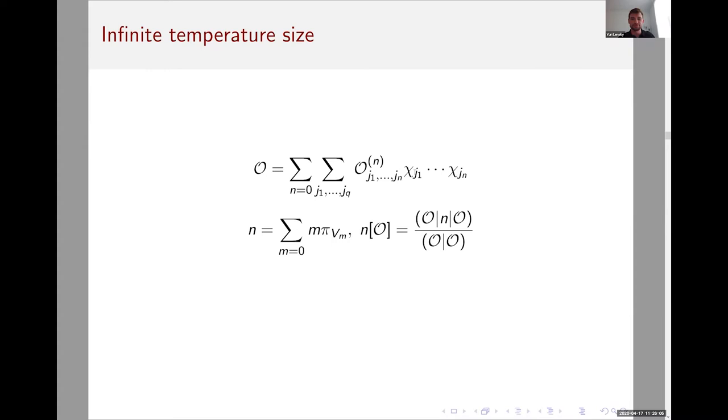This is what we call the infinite temperature size. We have some expansion of O, we have this number operator. The size of O, the average size of O, is just the expectation value of our number operator in the state corresponding to the operator we're interested in, normalized importantly by the overall Hilbert-Schmidt norm of the operator. Interestingly, this definition also lets you study the whole distribution of sizes of the operator. We can study the second moment and the nth moment in general in this natural way.